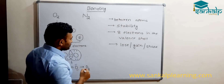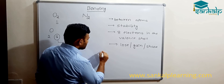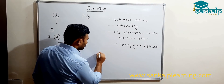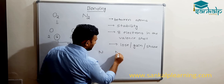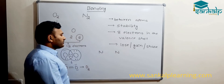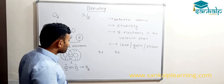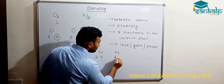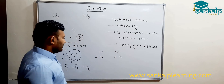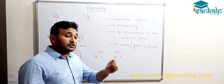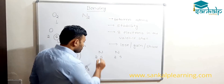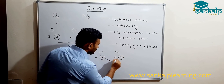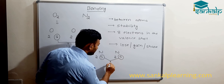Now let us look at nitrogen. The nitrogen molecule has two nitrogen atoms: N and N. The electronic configuration of the nitrogen atom is 2 and 5, and here also it is 2 and 5. Only the valence electrons are involved in bond formation, so these five electrons and these five electrons can take part in bond formation — altogether there will be 10 electrons.